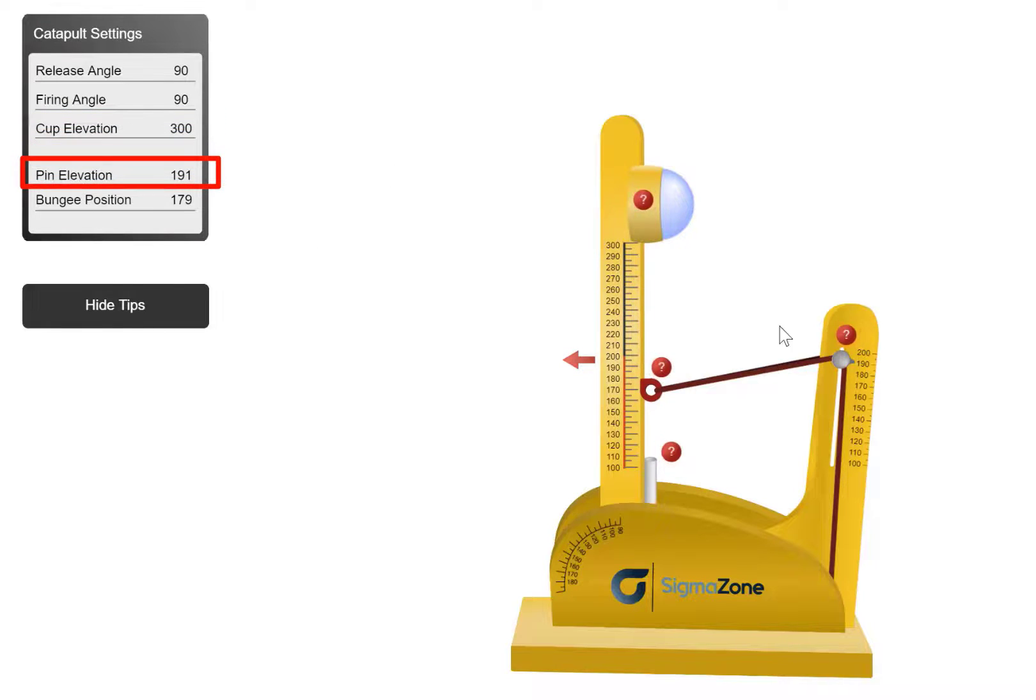The fourth factor is pin elevation which could change like this. So this is the pin elevation which can be 100 to 200. And the fifth factor is buggy position. And this buggy position is actually here which you can change. But the maximum I think can be up to 200 and the minimum can be 100.